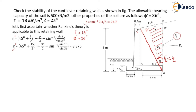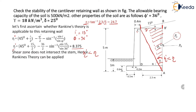On the other hand, eta equals tan inverse of 2.3 divided by 5, where eta is the angle between AC dash and AB. 2.3 is the horizontal distance between B dash and C dash, and 5 is the overall height of the retaining wall. So eta becomes equal to 24.7 degrees. Since eta dash (8.375) is less than eta (24.7), the shear zone does not intersect the stem and hence Rankine's theory can be applied.